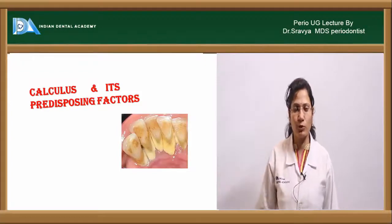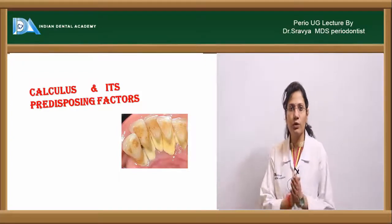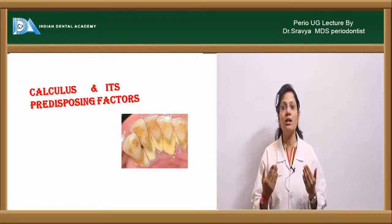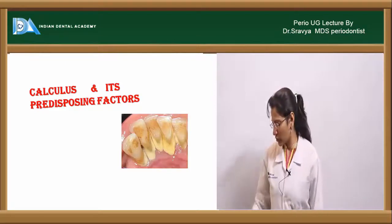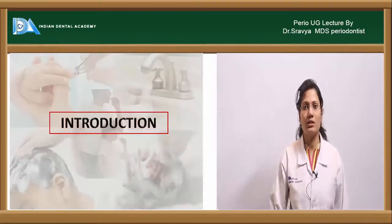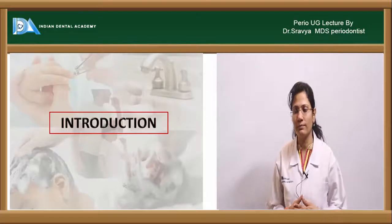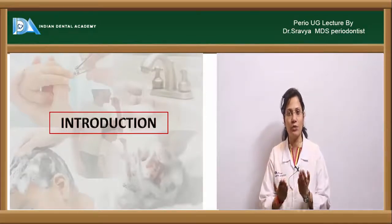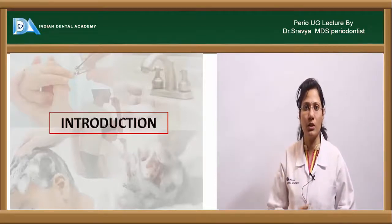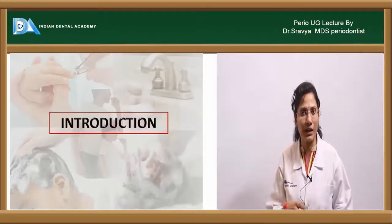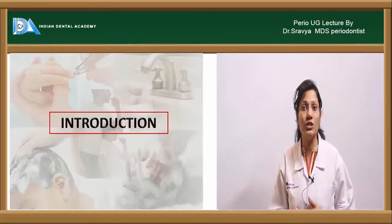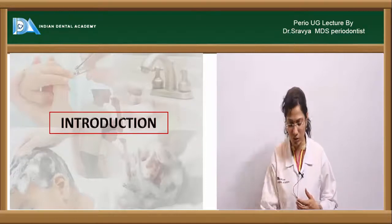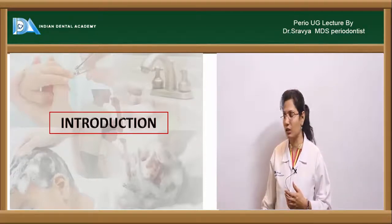The topic is calculus and its predisposing factors. Dental plaque is a soft deposit; once it gets mineralized, it becomes calculus. Once debris or soft deposit gets calcified or mineralized, it becomes very difficult to remove unless you go to a dentist. That is why oral hygiene becomes very important — you need to maintain your hygiene.